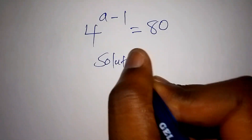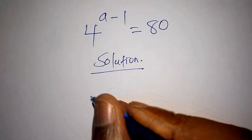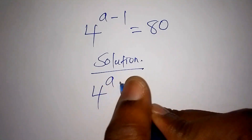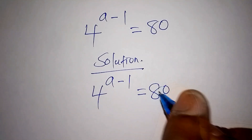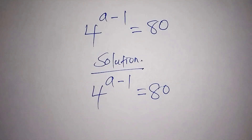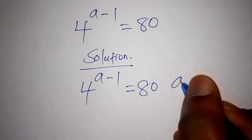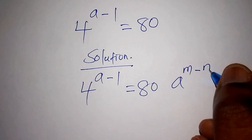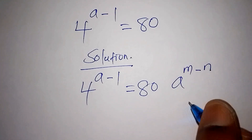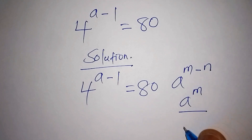So on the solution to this maths problem, we have 4 to the power of (a minus 1) equals 80. Let me take you through the basics. Suppose we have a to the power of (m minus n) — this can also be written as a to the power of m, all over a to the power of n.